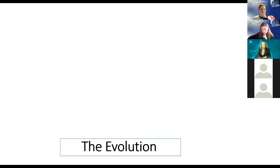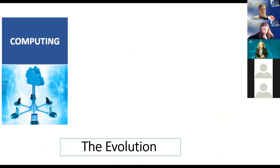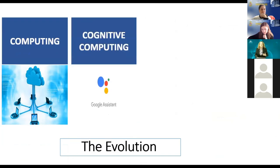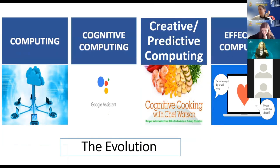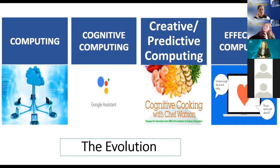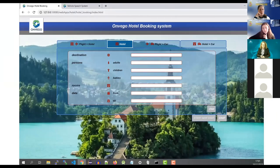When we talk about evolution, we're moving from computing to cognitive computing, to creative and productive computing, to affective computing — from a machine that does calculations to something intelligent, predictive, creative, and effective. This is a huge evolution. I believe we are still not fully there, but at least we have something to aspire to.